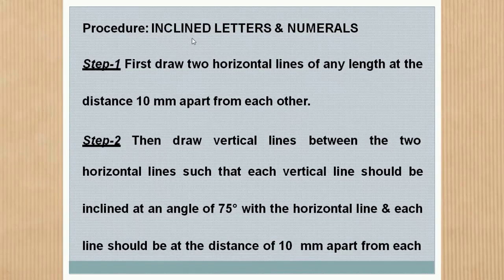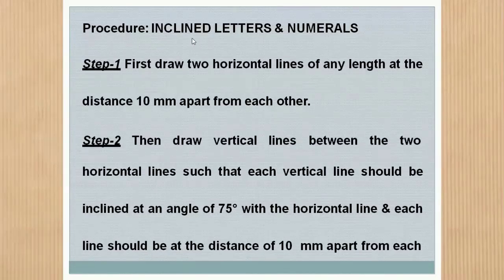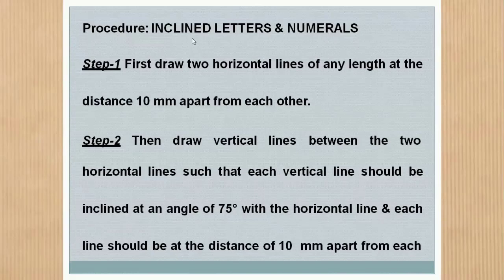Inclined letters lean to the right, the slope being 75 degrees with the horizontal. The size of a letter is described by its height. According to the height of letters, they are classified as Lettering A and Lettering B, which we will discuss in further slides. The single stroke inclined capital letters and lowercase letters are usually used in drawing; vertical and inclined lowercase alphabets are shown in the figures.